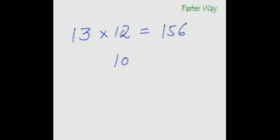So 12 is at the distance of plus 2 from 10 and 13 is at the distance of plus 3 from the base 10. Now to get the first two digits of your answer, all you need to do is add these numbers in a cross manner.